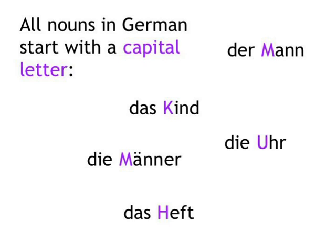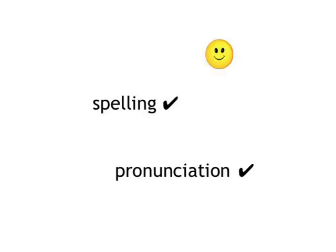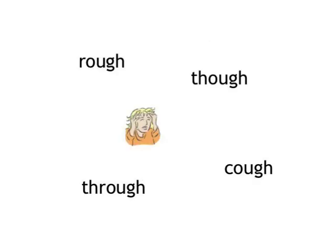Now, there are a lot of things that are easy in German, even easier than in English. So here's the good news. First of all, spelling and pronunciation are a lot more consistent than in English. What you see is basically what you say, or what you hear is what you write. And I don't have to tell you just how difficult English is in this respect — just think of words like 'rough', 'though', 'through', and 'cough'.